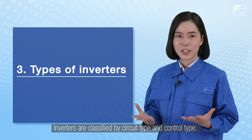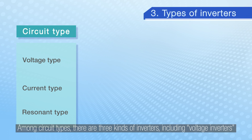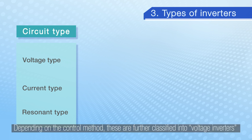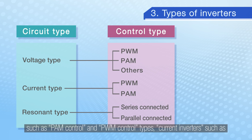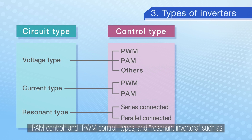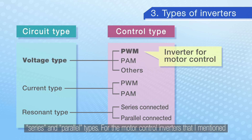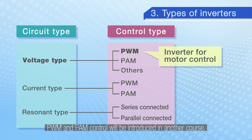Inverters are classified by circuit types and control types. Among circuit types there are three kinds: voltage inverters that output voltage, current inverters that output current, and resonant inverters. Depending on the control method, these are further classified into voltage inverters such as PAM control and PWM control types, current inverters such as PAM control and PWM control types, and resonant inverters such as series and parallel types. For motor control inverters, these applications use a PWM control type voltage inverter. PWM and PAM control will be introduced in another course.